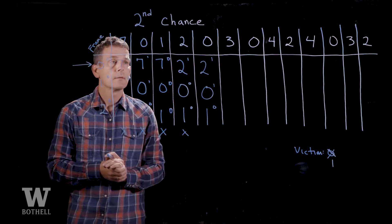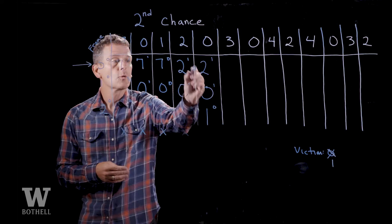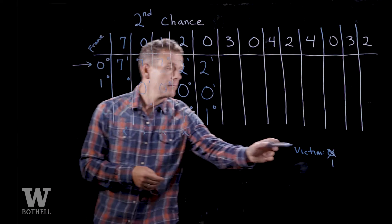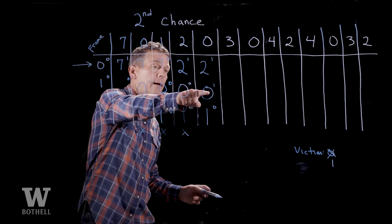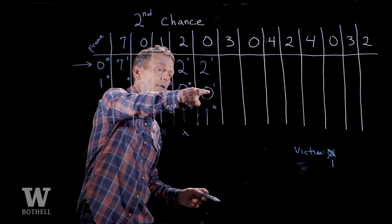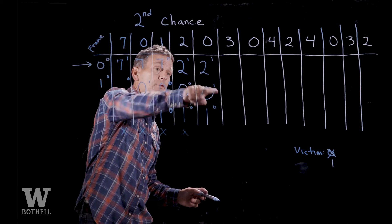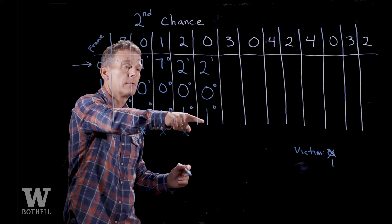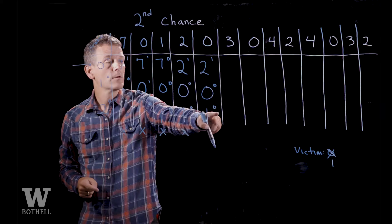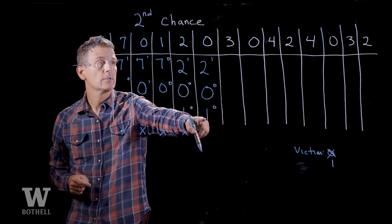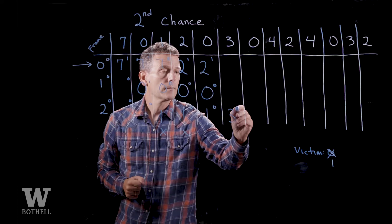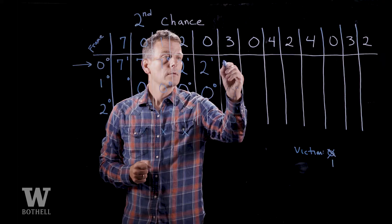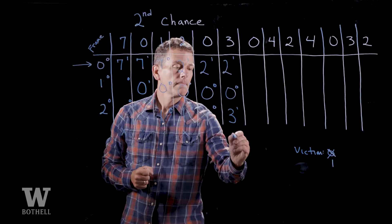Now virtual page three comes in. Two, zero, and one are in physical memory and we need to find a space for three. Our victim frame is one. The reference bit for zero is one, so we can't kick zero out — we'll set that to zero and move ahead. The reference bit for page one is zero, so we can kick out page one. Three goes there, its reference bit is set to one. Zero and two are still in memory. That's a page fault. Our victim frame was two, so we move it up — our victim frame becomes zero.